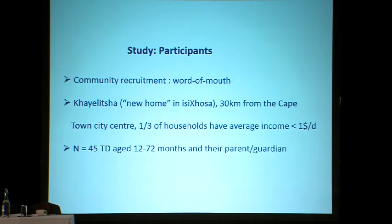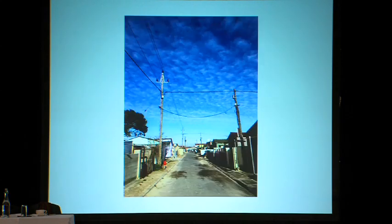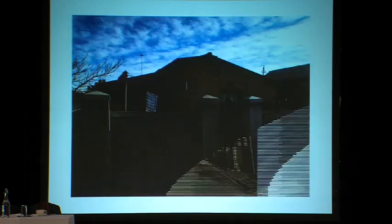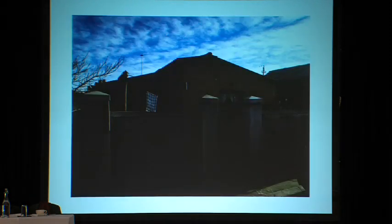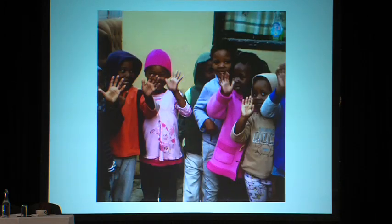We went to Kailisa, which is a low-income township about 30 kilometers from Cape Town. By word of mouth we recruited 45 typically developing children between the ages of 12 and 72 months and their parents or guardians. Our study was conducted in a typical Kailisa street, in a typical Kailisa home. Here are some of our participants queuing at the front door, ready to participate and do their bit for scientific endeavor.